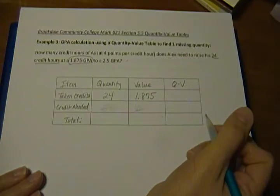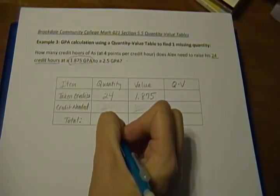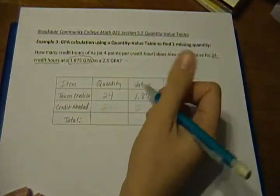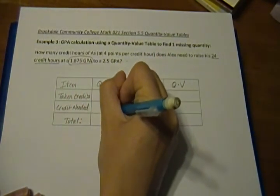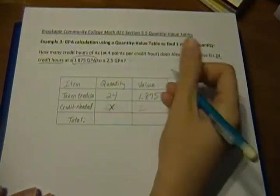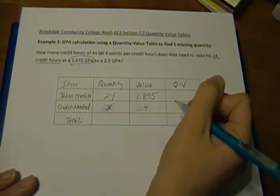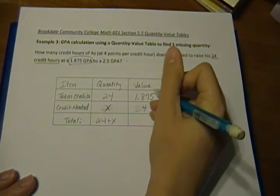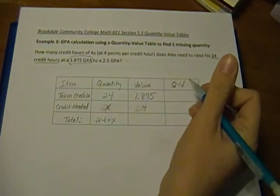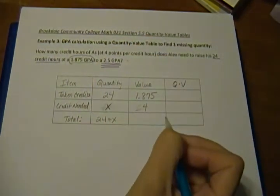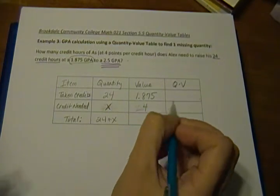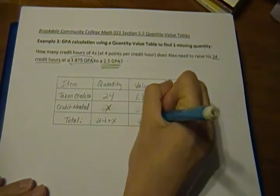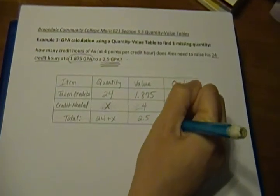Now, we want to know how many credits he needs of A's that are worth 4 points. We don't know, that's what we're finding. We're going to call that X. It's unknown, and that's what we're solving for, the number of credits he needs at a value of 4 points. So here, our total is going to be the 24 plus the X. And our total overall average value is our GPA that Alex hopes to have after he completes these courses. So his new GPA he's looking for, the 2.5, is the overall total average. That's going to be our total value.